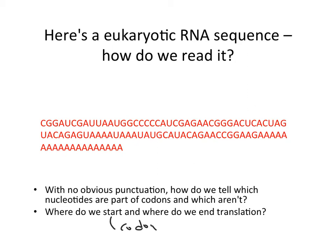Where do we start translation — the start codon? Where do we end translation? Stop codon. But how do we know where the stop codon is and where the start codon is? So the way this is written, where is the five prime end of this RNA molecule? The C. Right. So this is the five prime end of the messenger RNA. Here's the three prime end, where the three prime poly A tail is. Look, there it is. Poly A tail.